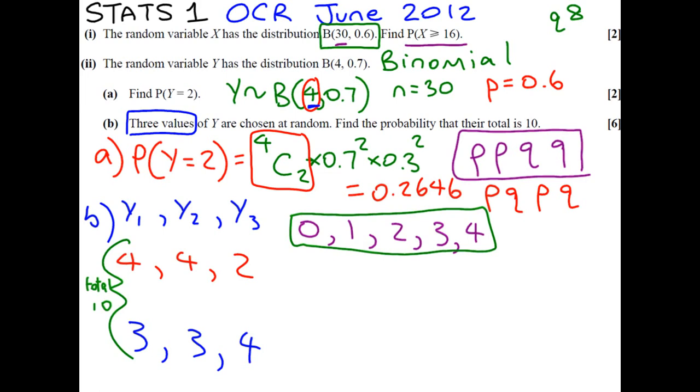So the probability of getting 4, a 4, and a 2 is going to be the probability that y equals 4, times the probability that y equals 4, times the probability that y equals 2. Now, if you think 4, 4, 2 could be 4, 2, 4, or even 2, 4, 4. So that means that we've got to times that amount by 3 to get the total probability. So it's 3 times that.